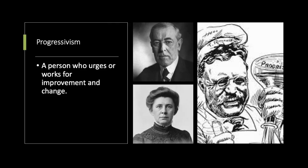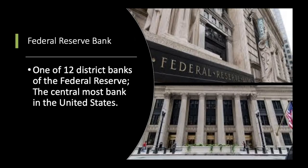Next word is progressivism, which is a person who urges or works for improvement and change — much like a reformer, but you're looking for progressive change. Next word is Federal Reserve Bank, which is one of the 12 district banks of the Federal Reserve, the central bank of the United States. The Federal Reserve is in charge of interest rates and the money supply in the United States.